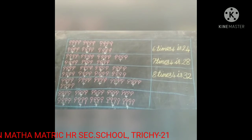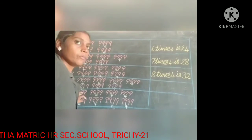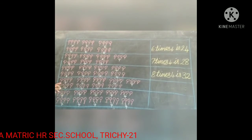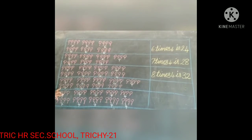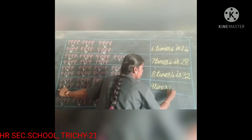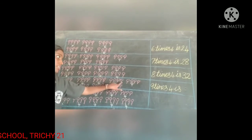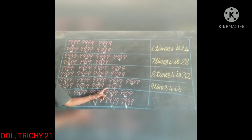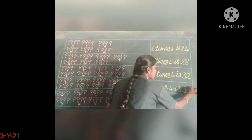Now look at the next box — the lollipops. How many are there in the next box? Count: 1, 2, 3, 4, 5, 6, 7, 8, 9. So 9 times 4 is... Write it. Count: 1, 2, 3, 4, 5, 6, 7, 8, 9, 10, 11, 12, 13, 14, 15, 16, 17, 18, 19, 20, 21, 22, 23, 24, 25, 26, 27, 28, 29, 30, 31, 32, 33, 34, 35, 36. So 9 times 4 is 36.